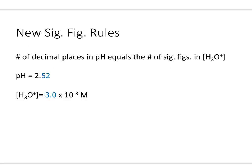Before we get started, let's look at the significant figure rules. For logarithmic problems, the number of decimal places in the pH value are going to equal the number of sig figs in the concentration value. So if I have a pH equal to 2.52, there are two decimal places in this pH value, so when I calculate my H3O+ concentration, I'm going to have two sig figs in the answer. This applies to pOH and OH- as well.